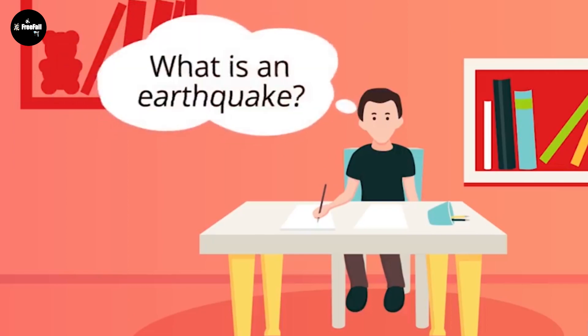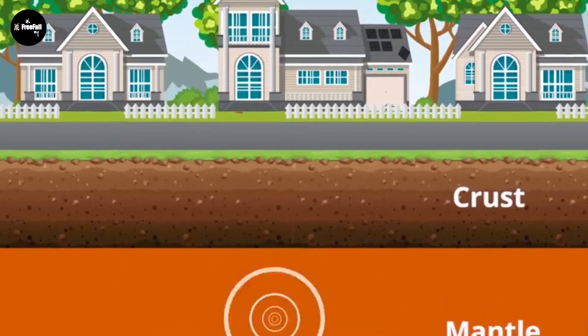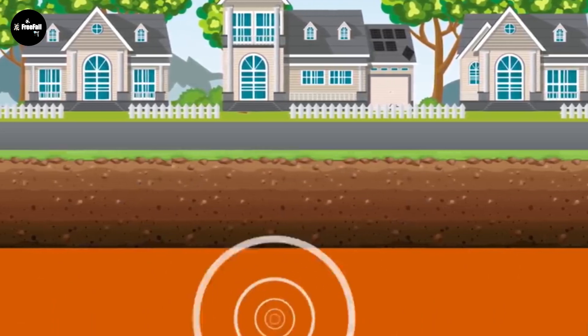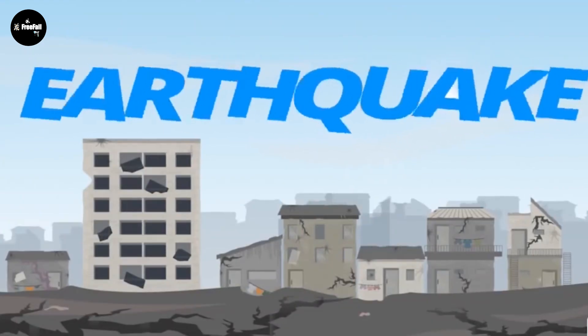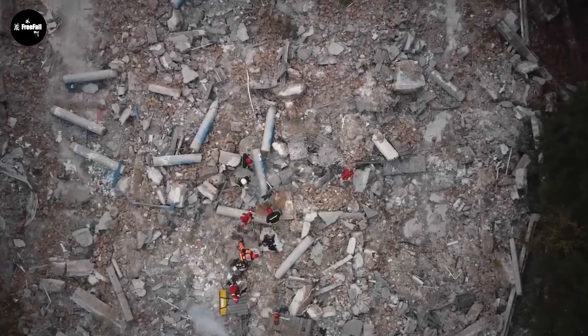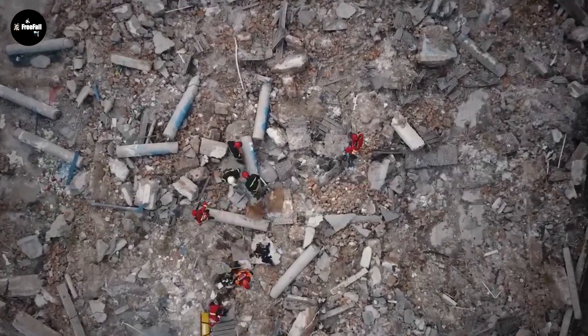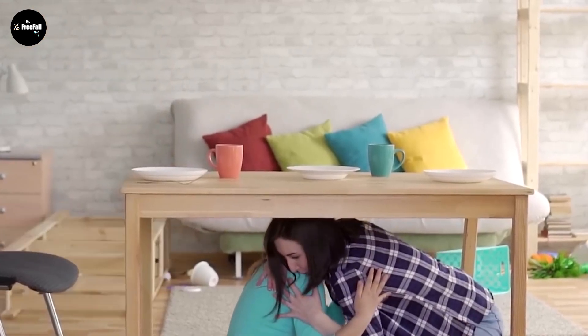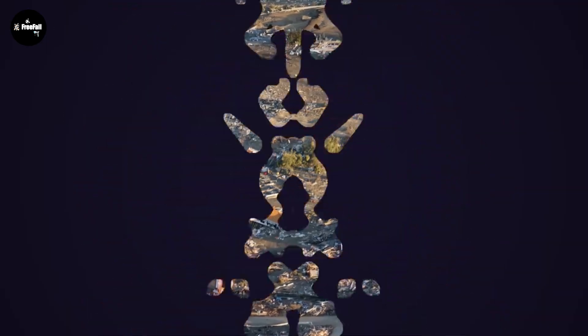An earthquake is also known as seismic — a term used widely in the field of geography. In other words, an earthquake is the rapid release of elastic energy accumulated at a certain point in the Earth's interior, causing seismic waves that impact the surface, causing damage to structures, deformation, and hazards to humans.